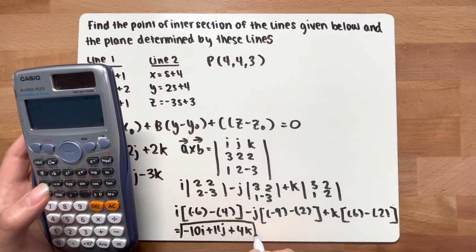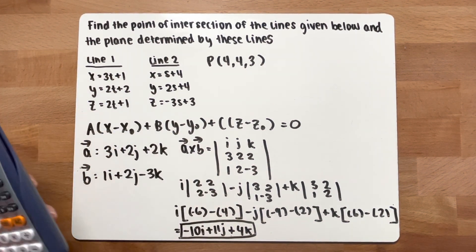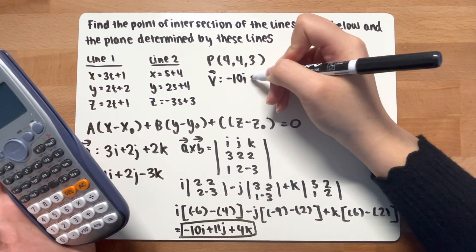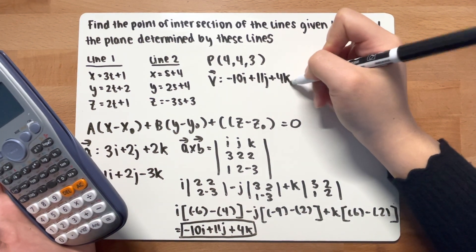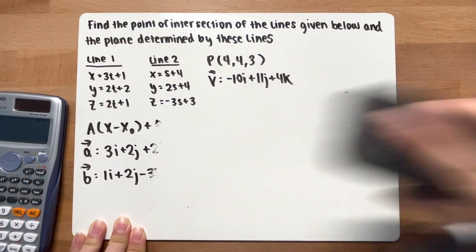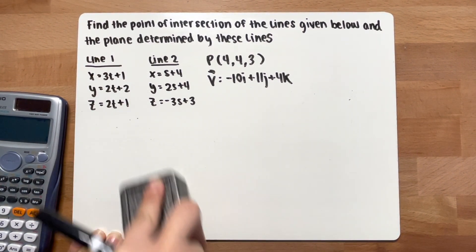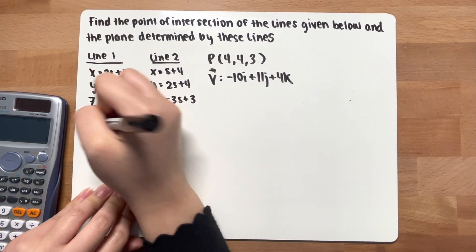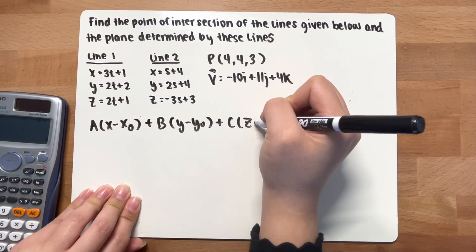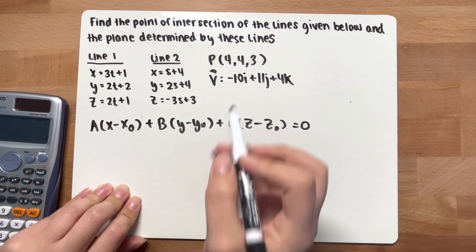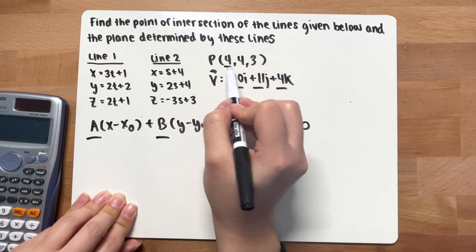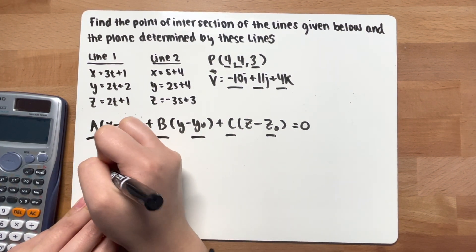This gives the normal vector v = -10i + 11j + 4k. Now plug into the equation of a plane, using the vector components -10, 11, 4 for a, b, c and the intersection point (4, 4, 3) for x₀, y₀, z₀.